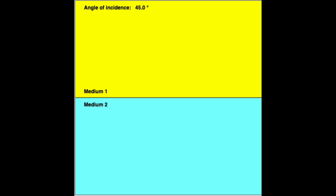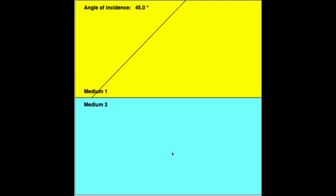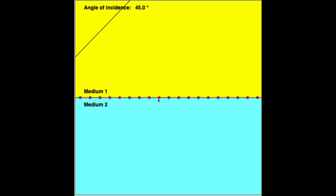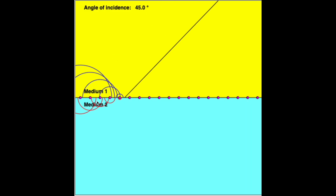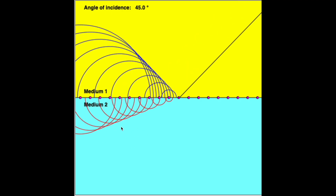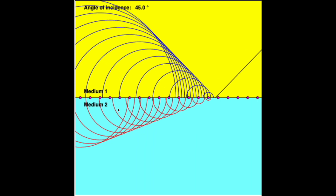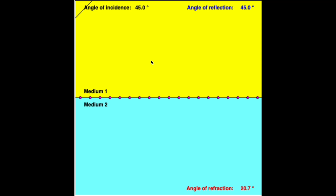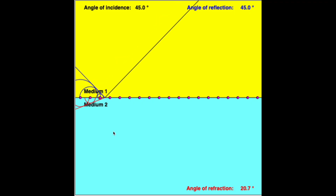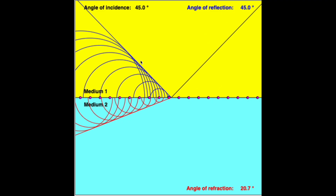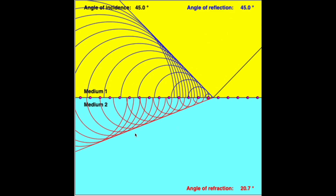We can understand Huygens' wave model by taking a look at the following animation. A primary wavefront approaches the boundary between medium 1 and medium 2. Medium 2 has a higher refractive index, so light will travel slower in medium 2. Huygens explained that when the wavefront reaches the boundary, each wavelet that was part of the wavefront will propagate in a spherical direction towards both medium 1 and medium 2. However, since medium 2 has a higher refractive index, the wavelet will propagate slower. The superposition between all the wavelets results in a new wavefront being formed, and the direction of propagation of the wavefront changes when moving from medium 1 to medium 2. This explains the phenomenon of refraction.